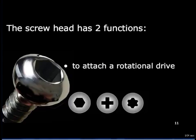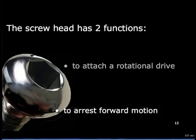The screw head has two functions. One is to permit the attachment of a driver in order to produce the necessary rotation. This is achieved either by slotting the head, as in wood screws but no longer in surgery, or by producing a shaped recess — usually hexagonal, but may be a crosscut or a star shape. The second function of the screw head is to arrest motion when the head contacts the surface of the bone, plate hole, or washer, which is effectively a one-hole plate.